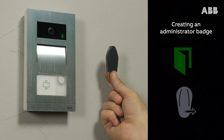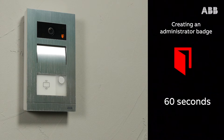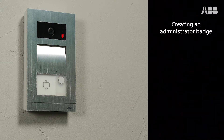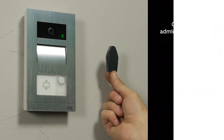If you do not do this within the 60-second time period, the LED turns red. You will then need to cut power to the outdoor station and then turn it on again. Please note that an administrator badge is only used for configuring badges and can no longer be used as a user badge.